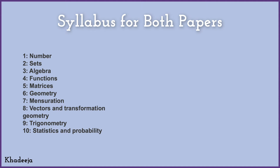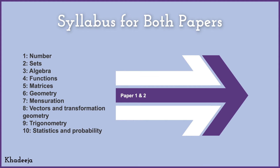All these topics make up Paper One and Paper Two of Mathematics B. You have to keep in mind that all of these topics are assessed in both papers — it's not that half come in Paper One and half in Paper Two. Both Paper One and Paper Two assess all of these topics and questions can come from anywhere.